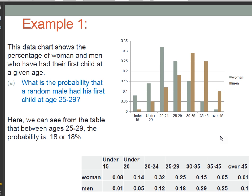In our first example we have a chart and we have a graph and it says this data chart shows the percentage of women and men who have had their first child at a given age. So let's take a look at the chart.